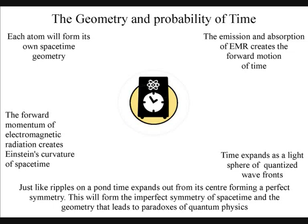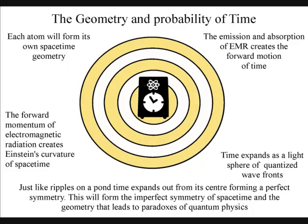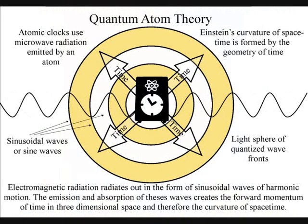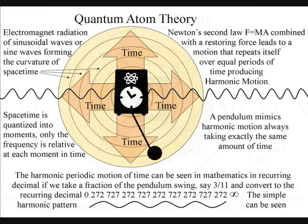In quantum atom theory, time has geometry and asymmetry that can explain the probability and non-locality of quantum physics. If we look at the way we measure time using an atomic clock,